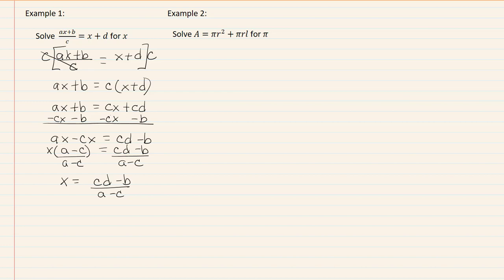In example two, the variable that we're solving for is pi, and it's already on the same side of the equal sign. We don't have them on both sides, so that means I can just go ahead and start my factoring then. We'll factor out the pi, leaving me with r squared plus rl. Now divide by the r squared plus rl, and I get that pi equals a over r squared plus rl.